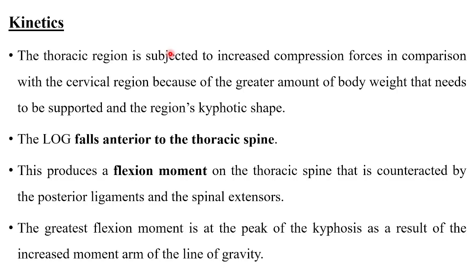Coming to the kinetics, the thoracic region is subjected to increased compression forces compared to the cervical region because of the greater body weight that needs to be supported and the region's kyphotic shape. The line of gravity falls anterior to the thoracic spine, producing a flexion moment that is counteracted by the posterior ligaments and the spinal extensors. The greatest flexion moment is at the peak of kyphosis as a result of the increased moment arm of the line of gravity.